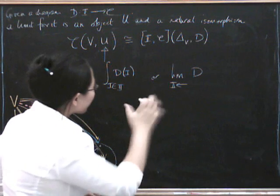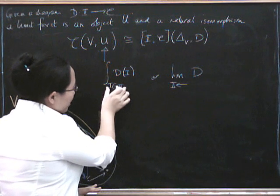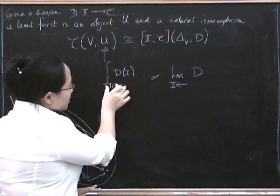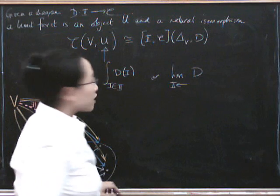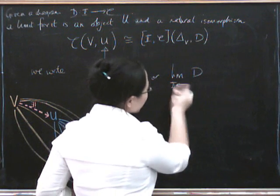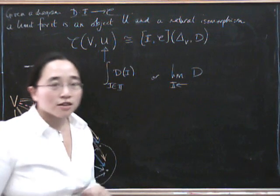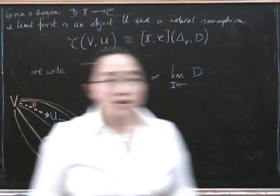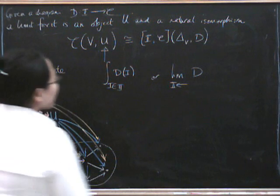It's important to remember which way around these go, because if you move this variable to the top, then that's a colimit. And this also switches around when you do colimits. As far as I'm concerned, it's completely impossible to remember which one is which, but never mind.